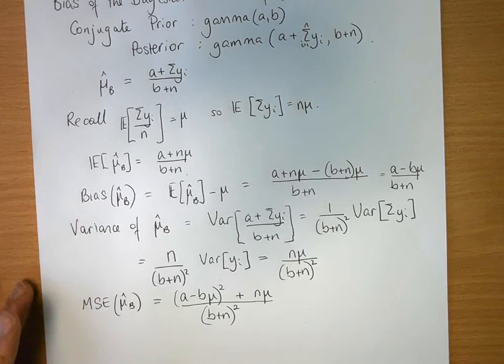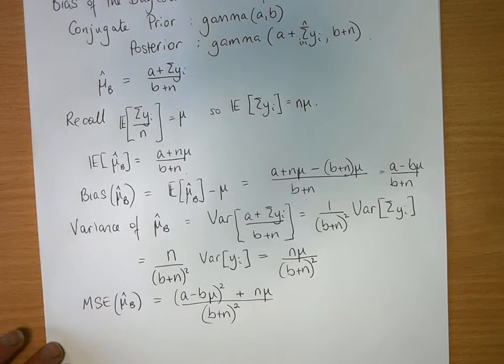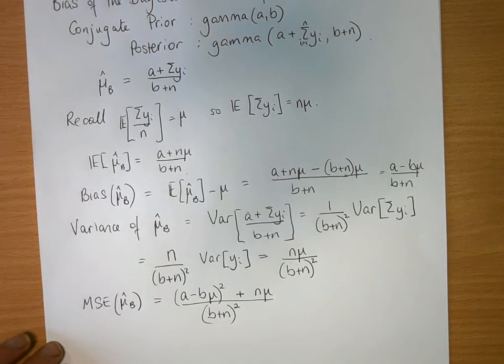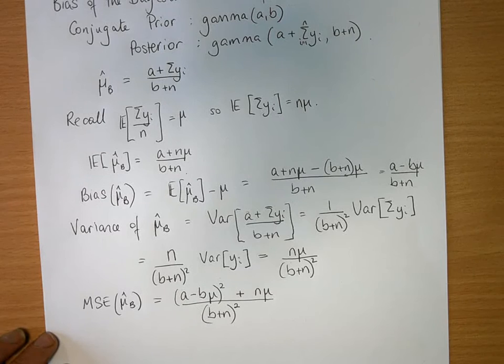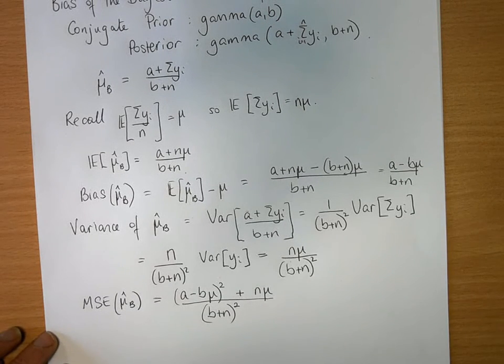So that's how you calculate the mean square error of the Bayesian estimator of the parameter of a distribution given that your data are Poisson and that you've used a conjugate prior.